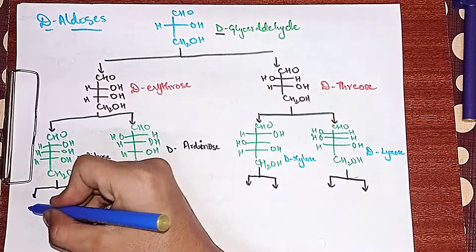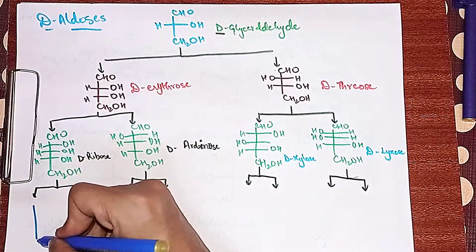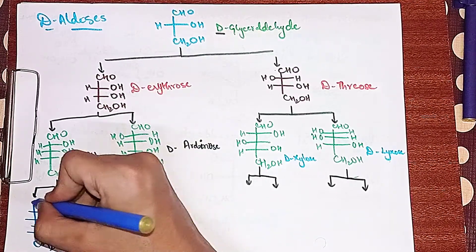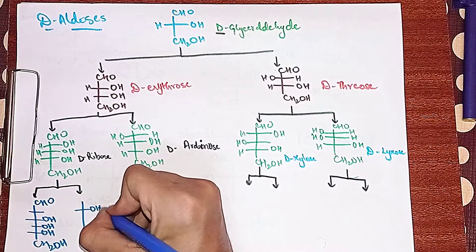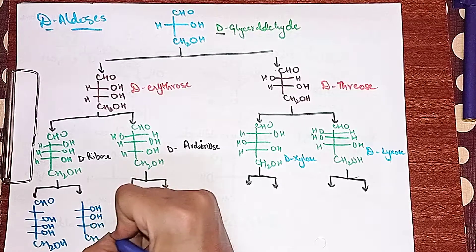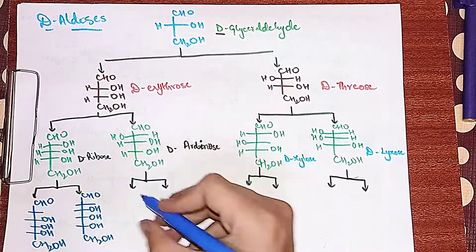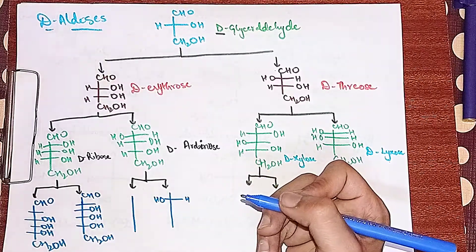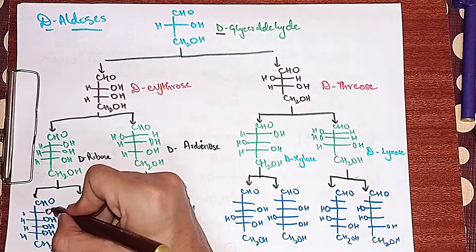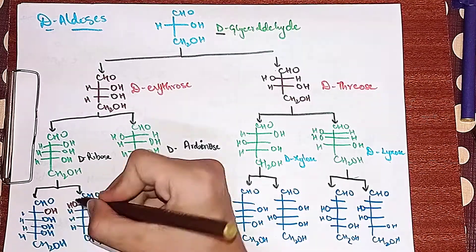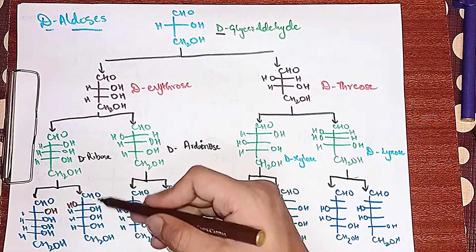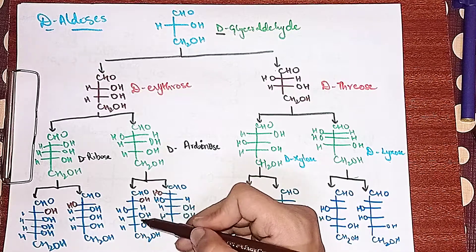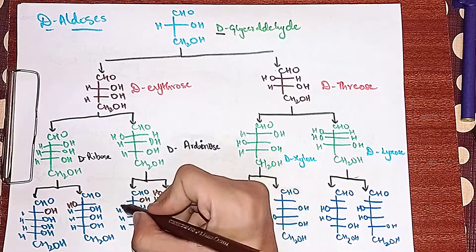Now adding one more carbon atom to all five 5-carbon aldoses gives 6-carbon aldoses. Drawing these configurations with a blue pen: keeping all lower carbon atom OHs the same and only varying the new OH — when OH is introduced on the right, we get D-allose, and when on the left, we get D-altrose.